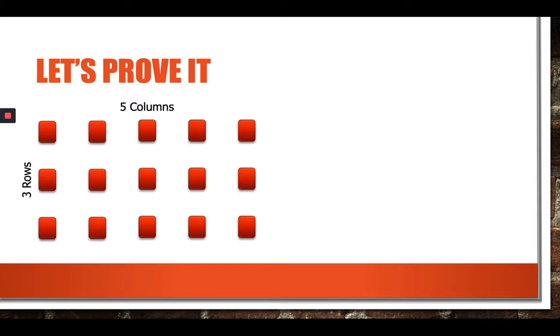And we know already that we can find how many squares are in this array by multiplying the number of columns and the number of rows. So we could say three times five equals what? Correct. We know that equals 15.